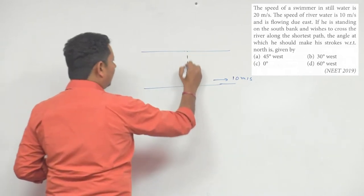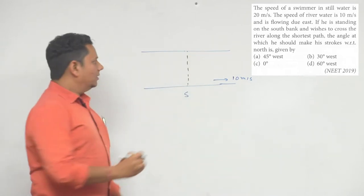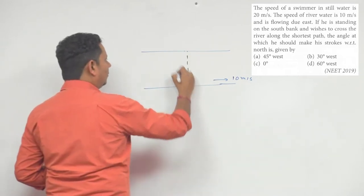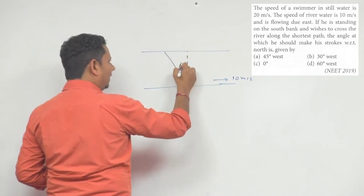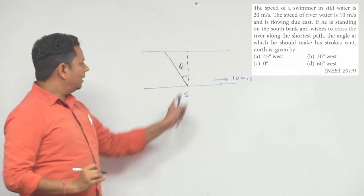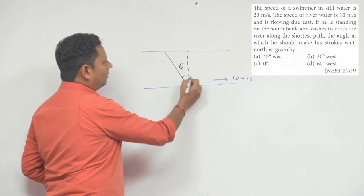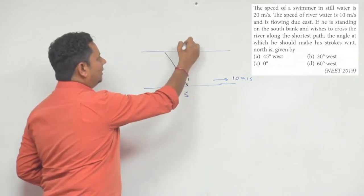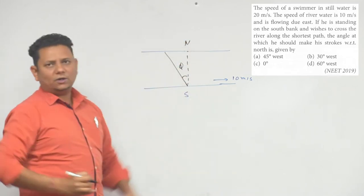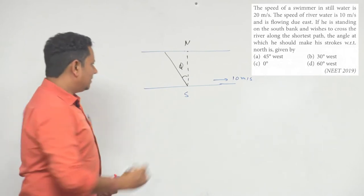Now, for the shortest path, you need to take a certain angle phi here. If you travel at this phi angle, the river will bring you back and you will reach exactly at the right opposite corner. It's a very simple question. In this case, you need to know...